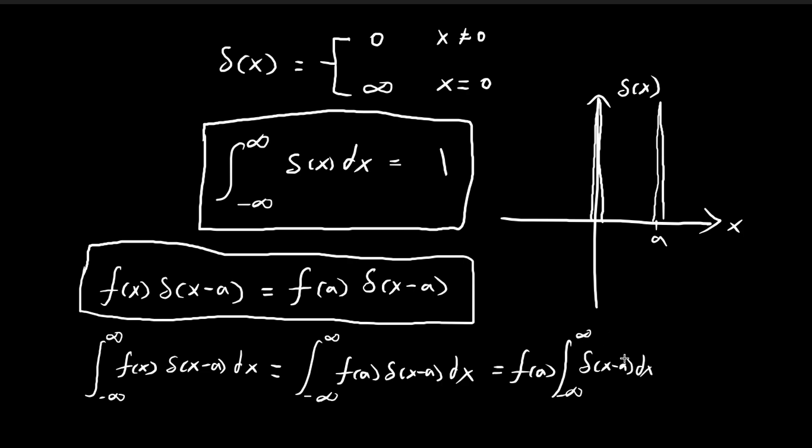which by definition equals 1. If I integrate the Dirac delta function, this equals 1. So in the end, I get f of a. This is another important property that will be useful later.